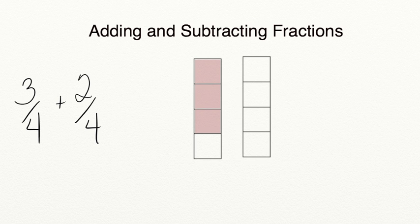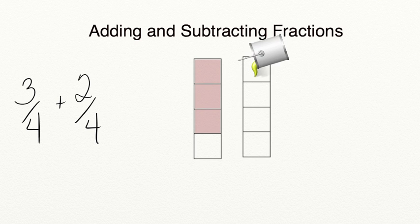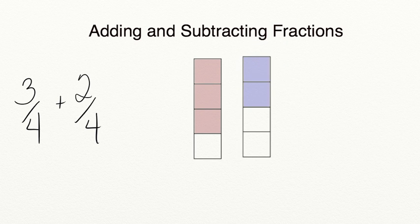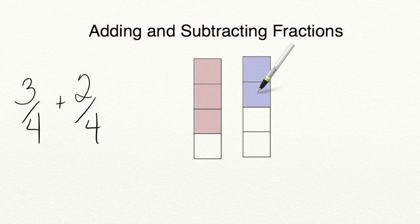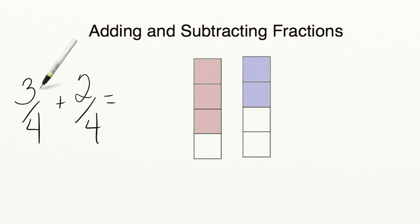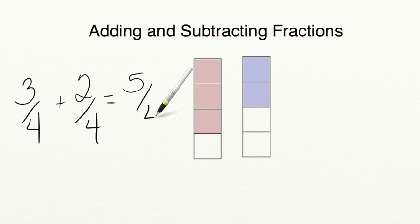Now we need to add two-fourths to the three-fourths that we have shaded in. Let's shade in two-fourths in our second fraction bar: one-fourth, two-fourths. Now all we need to do is add up how many shaded squares we have: one, two, three, four, five-fourths shaded in all. So three-fourths plus two-fourths is equal to five-fourths.